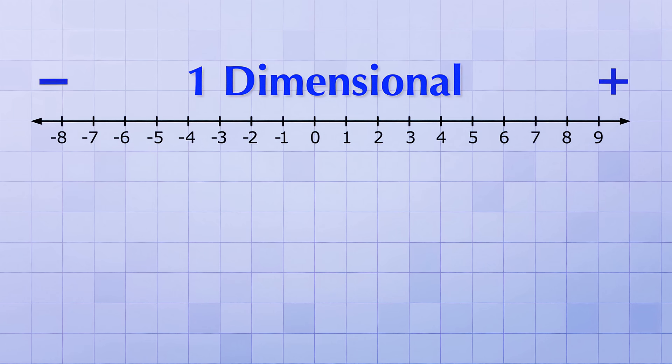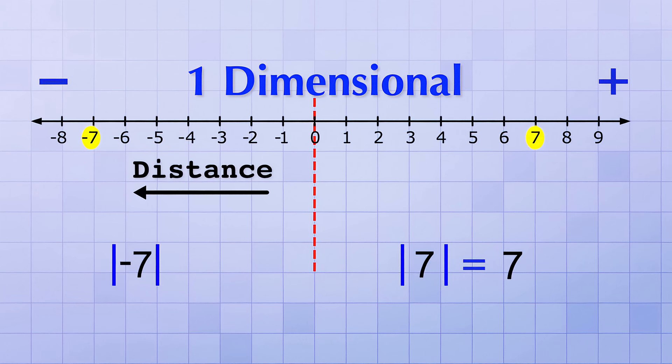If you ask for the absolute value of any positive number along that line, you're asking for the distance that number is from 0, which is just the number itself. And since the negative numbers are a mirror image of their positive counterparts, when you ask for the absolute value of any negative number along the line, the only difference is the direction or sign of that number. And that's why the absolute value of a negative number is just its positive counterpart.